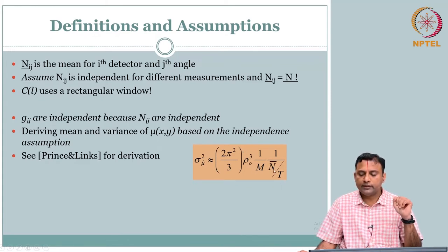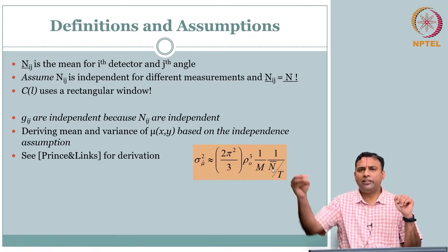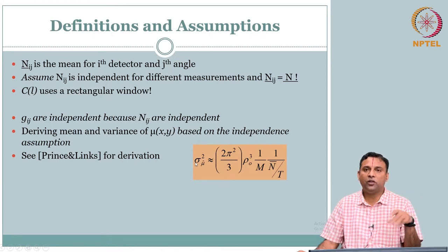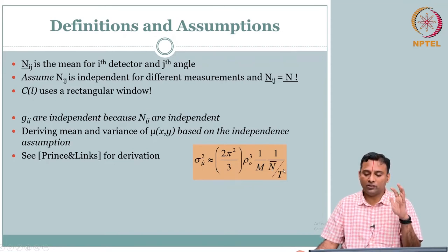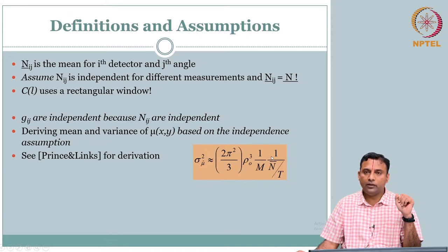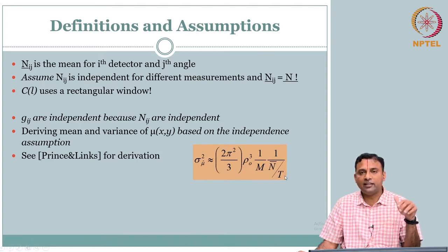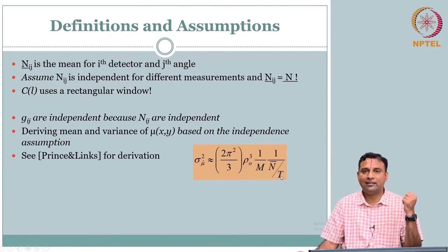n-bar is the average number of photons. If you shoot more photons, you reduce the variance — which we knew. But the downside is you do not want to send too much. If you send high energy, n increases but it does not interact much and comes out. So it is not a one-way street. And n-bar divided by t — t is your detector width. So it is the number of photons per detector. If you increase that, your noise will reduce.